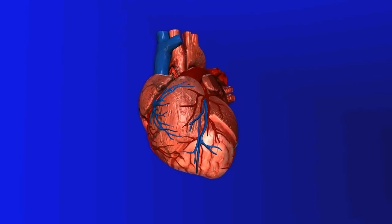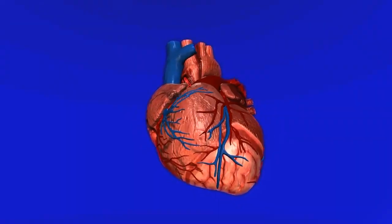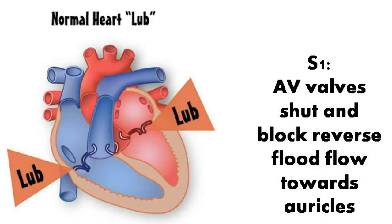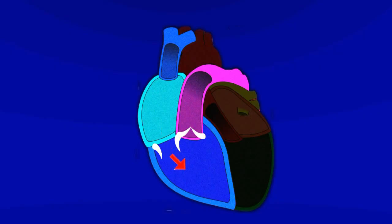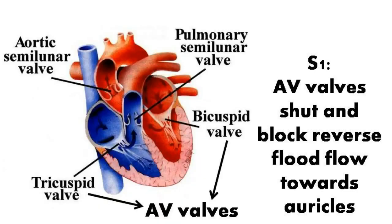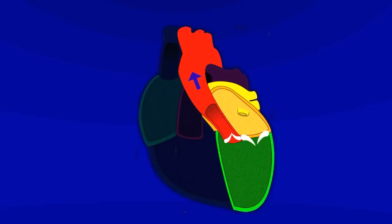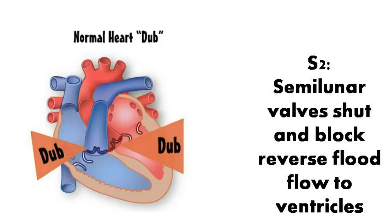The heart sounds we hear are actually the sound of closing valves. There are two normal heart sounds: lub and dub. The first sound is produced when the valves between the auricle and ventricle shut, blocking the reverse blood flow towards the auricle. This sound is called the first heart sound or S1. The second heart sound, or S2, is produced — the dub — when the semilunar valves shut and stop blood from returning to the ventricles from the aorta and pulmonary artery.